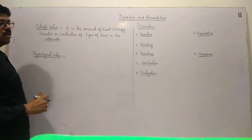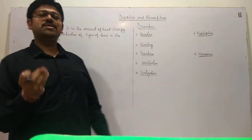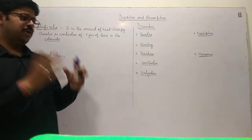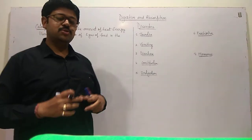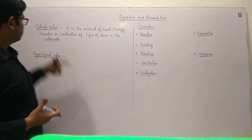That is called Calorific Value. We take 1 gram of food and burn it in the calorie meter. The amount of energy released is the Calorific Value.